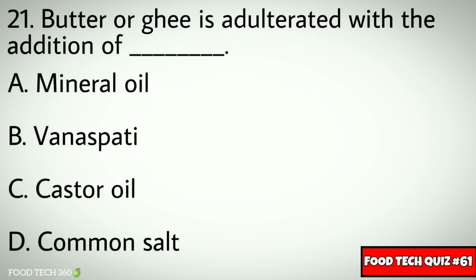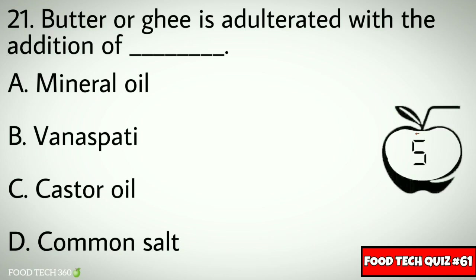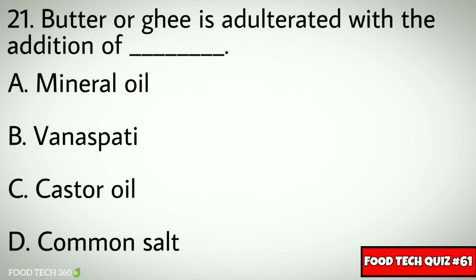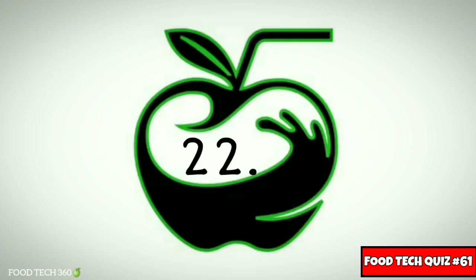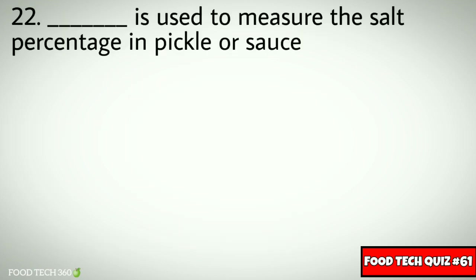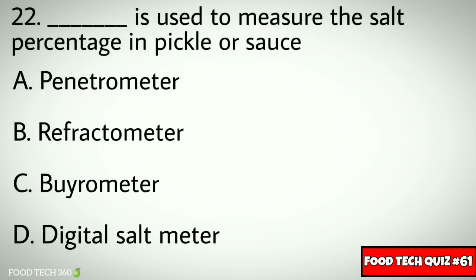Question number twenty-one: butter or ghee is adulterated with the addition of — options: a) mineral oil, b) vanaspati, c) castor oil, d) common salt. Correct answer: b) vanaspati. Question number twenty-two: which instrument is used to measure the salt percentage in pickle or sauce? Options: a) penetrometer, b) refractometer, c) bitter meter, d) digital salt meter.